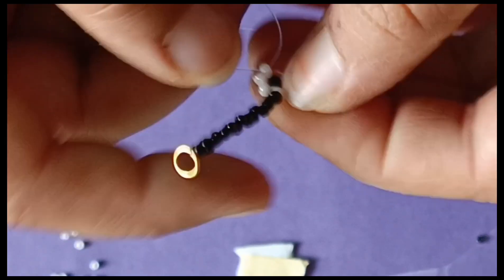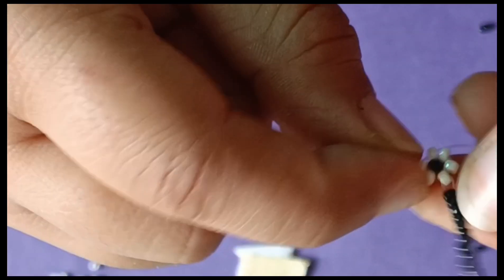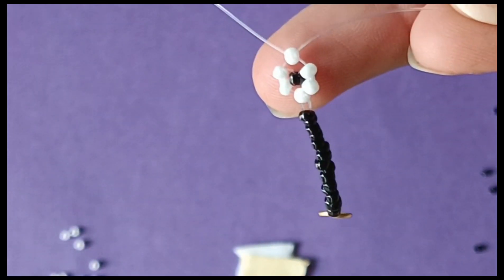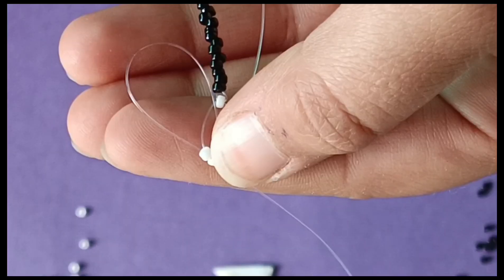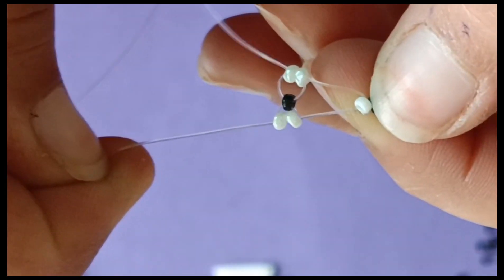Then I will insert the beads in the wire and then I will add a flower in the same process which I have made in the last bracelet. I will insert the beads in the middle of the beads and then I will insert the beads in the same process. So I will show you again the flower.